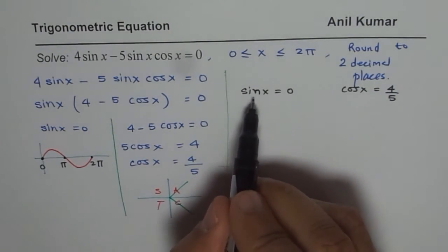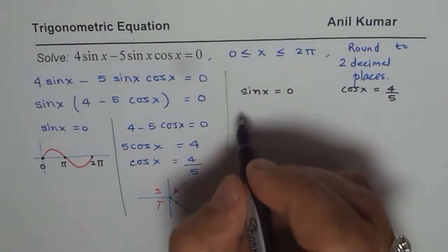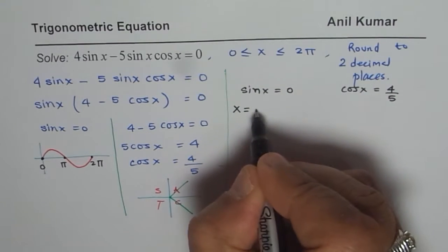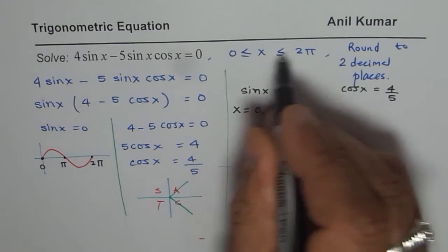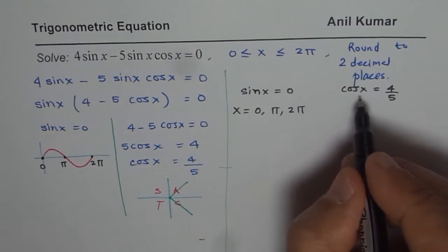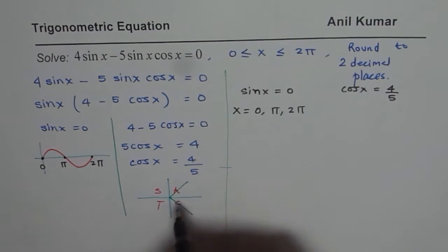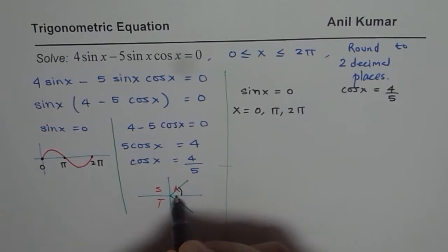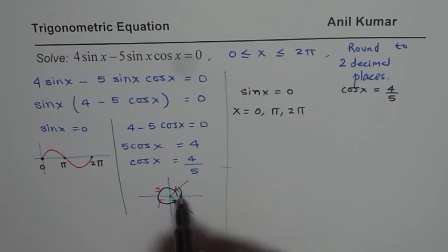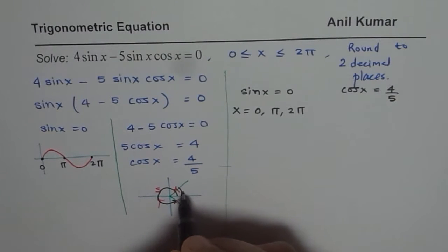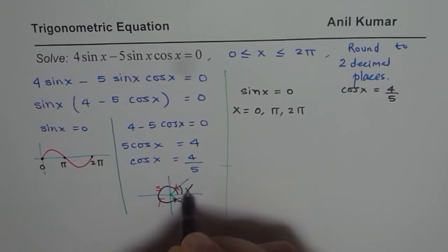And we have already figured out the solutions for sin x equals to 0. We say x is equals to 0, pi or 2 pi in this domain. And for cos x equals to 4 over 5, we know it is two angles. One is this angle and the other one is this much. So we need to find the acute angle. So let us find this acute angle first and let me call this alpha.